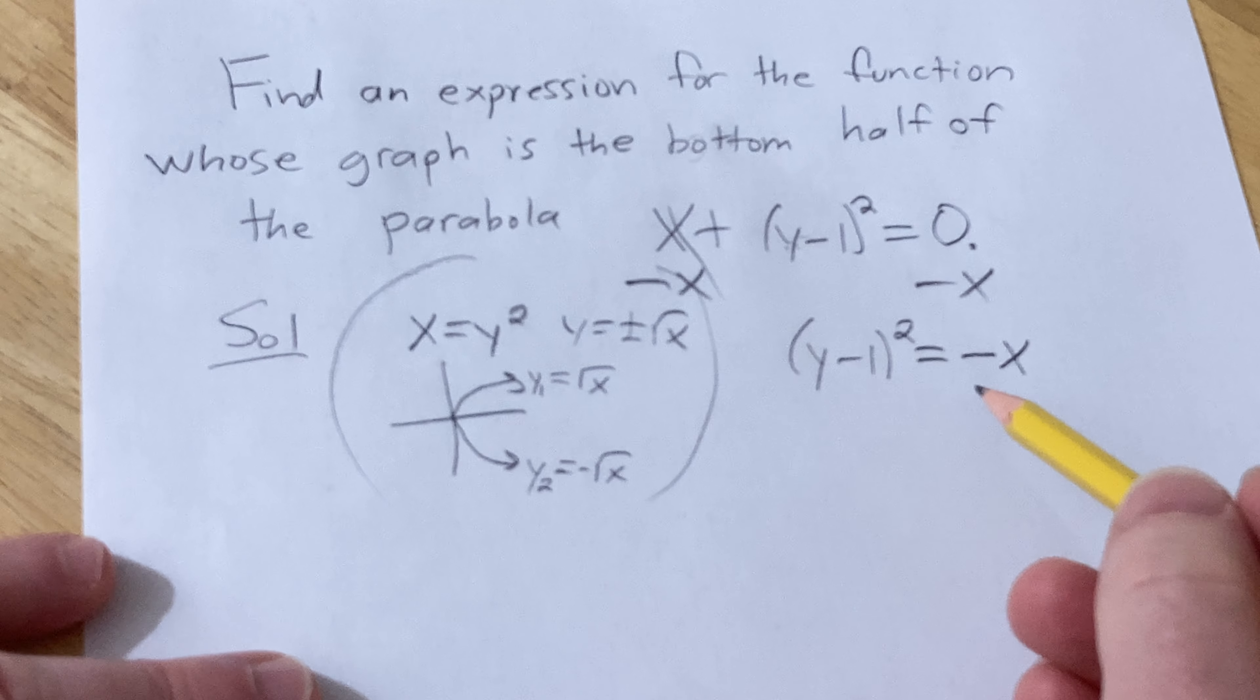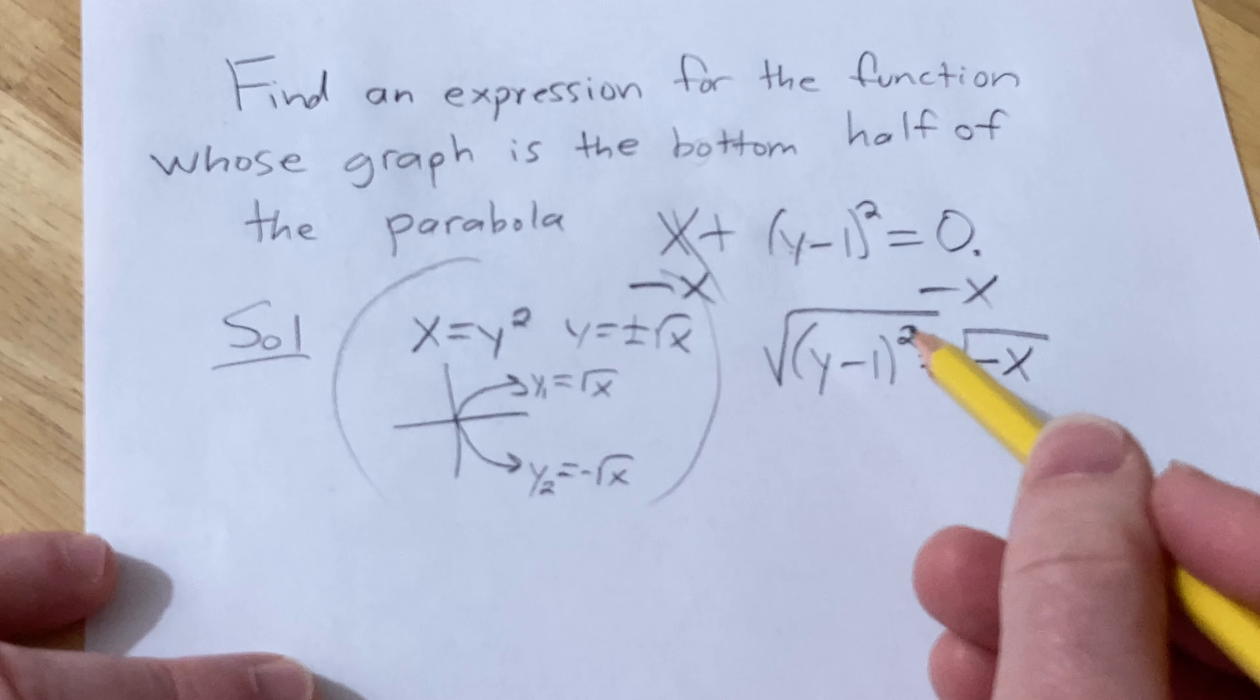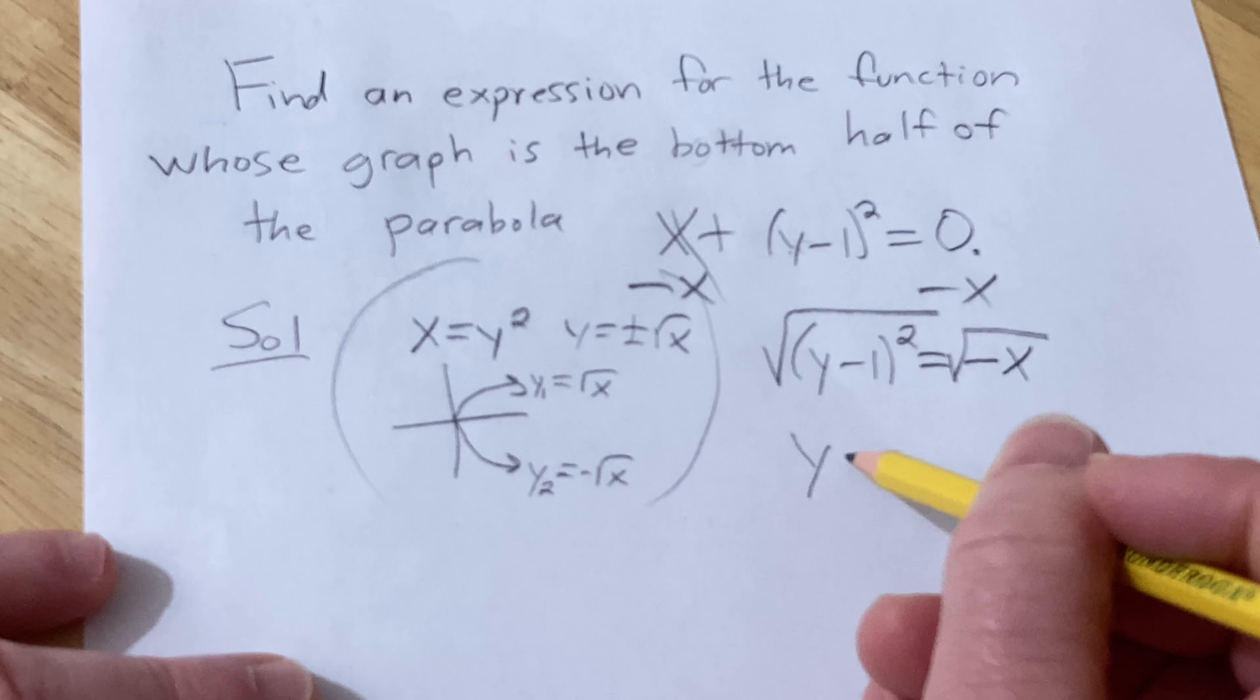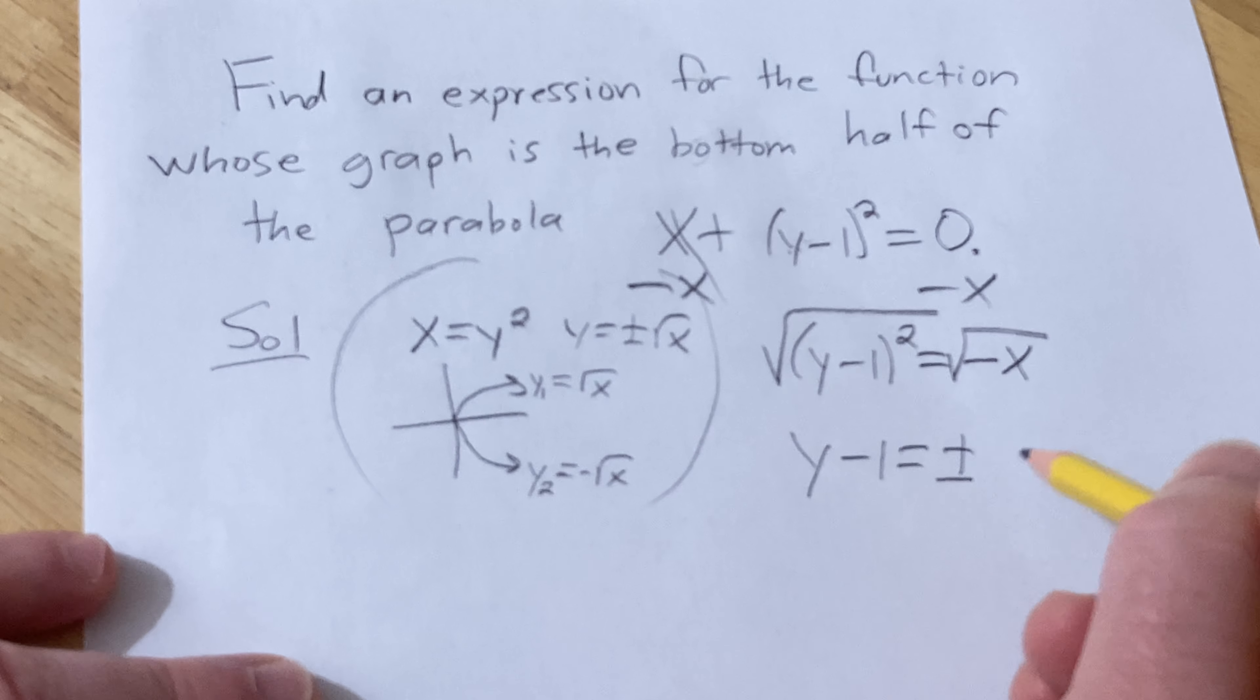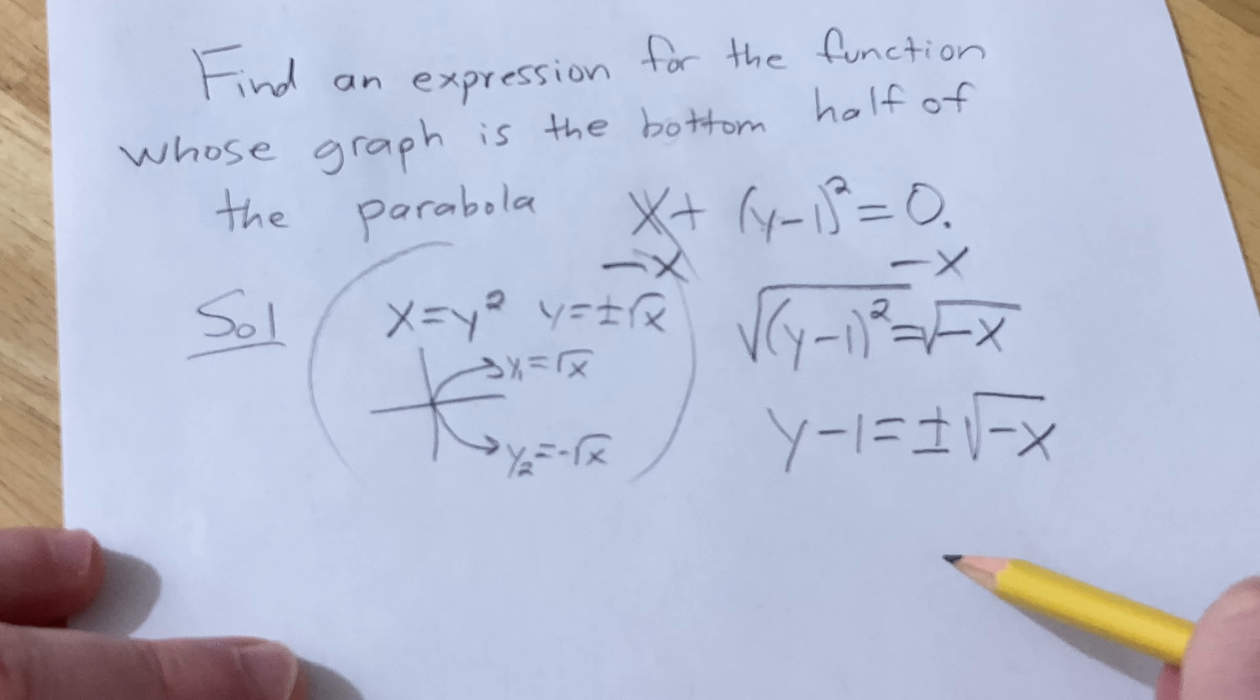And so now we take the square root of both sides. Because you're taking a square root and you have a variable squared, you do have to put a plus or minus. And then the plus is going to give you the top half and the minus is going to give you the bottom half. Just like here. So the minus will give you the bottom half, so we want the minus.